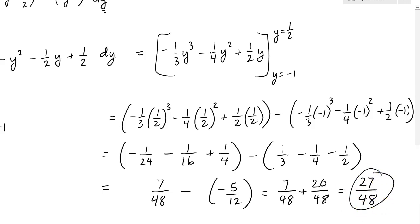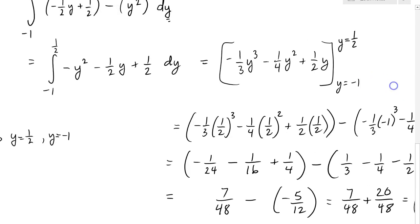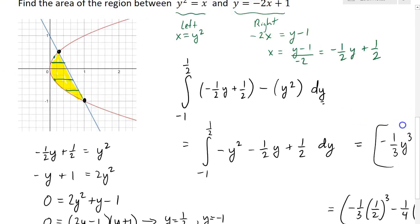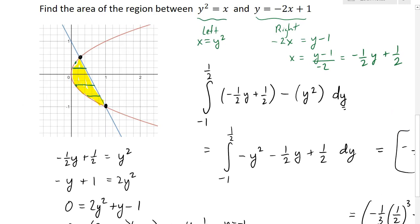So the area between the two curves found using integration with respect to y is 27 over 48. Sometimes slicing horizontally makes more sense than slicing vertically. I hope you found these two examples helpful.